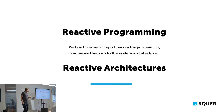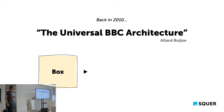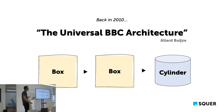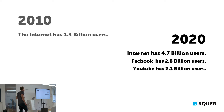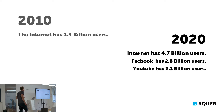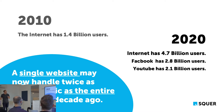Back in 2010 when I started my first big project, architecture usually looked like the BBC — box-box-cylinder — architecture. What changed since 2010 is fundamental: in 2010 the internet had 1.4 billion users; in 2020 it has 4.7 billion. Facebook has 2.8 billion users and YouTube has 2.1 billion. A single website in 2020 may have twice the traffic of the whole internet 10 years ago. This triggered clever people to invent the reactive manifesto.